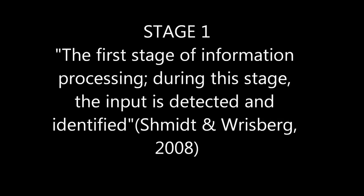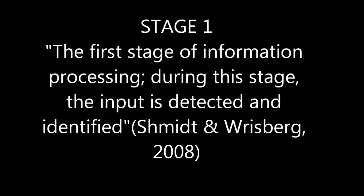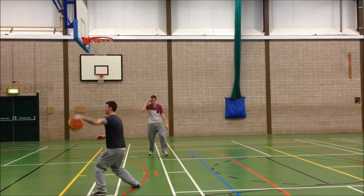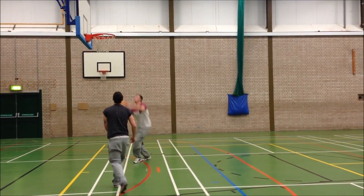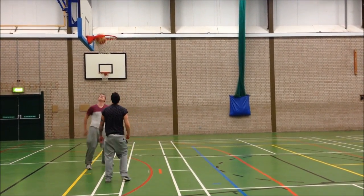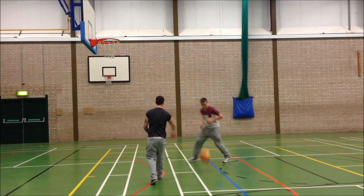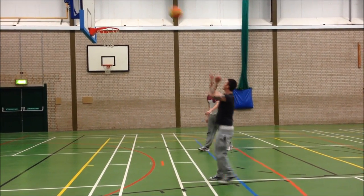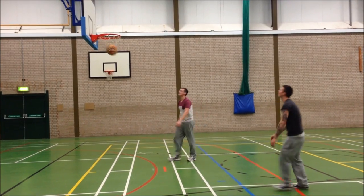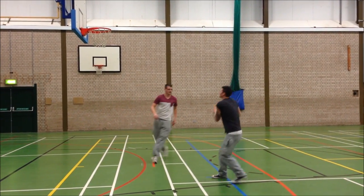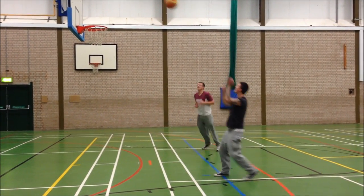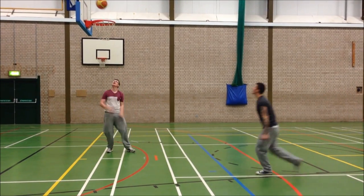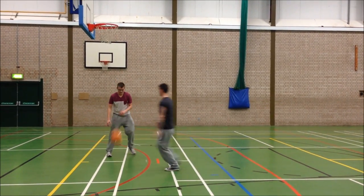Within stage one of stimulus identification, performers analyse the content of incoming environmental information using a variety of sensory systems, such as vision, audition, touch, kinesthesis and smell. The performer may also detect patterns of the ball's movement, direction and speed.